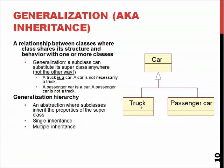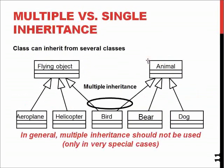Generalization, also known as inheritance, is the traditional and well-known mechanism of object-oriented programming, so I'm not going to go through it in detail here. Basically, these objects can inherit all the methods and attributes of the parent object.